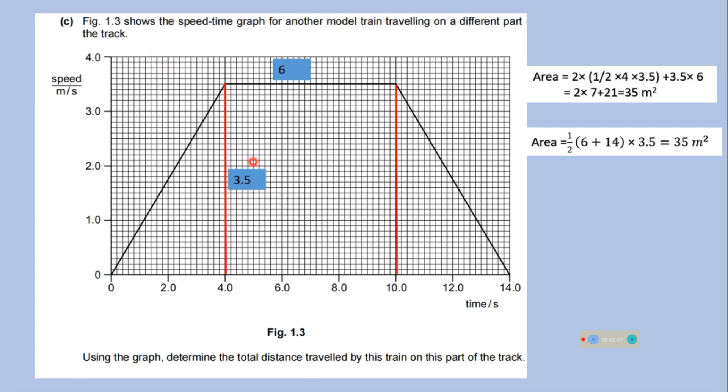This figure shows the speed time graph for another model train travelling on a different part of the track. Use the graph to determine the total distance travelled by this train. And the area covered under this graph gives you an idea of the distance travelled by the train. This is a triangular shape here. This is another triangular shape here. And the middle part represent a rectangle. So you can calculate the separate areas. And then you can add to find the total distance.